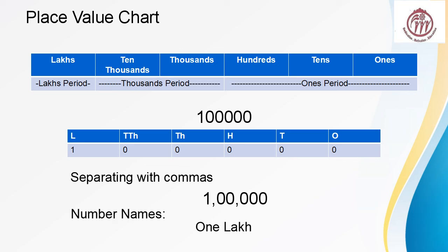So for 1, we have added a new place, and that is lakhs. That is why we name this number as 1 lakh. Lakhs we have taken in a separate period. Now in the place value chart we have 3 periods: ones period with ones, tens, hundreds; thousands period with thousands and ten thousands; and lakhs period.